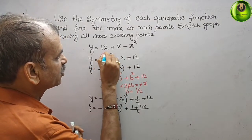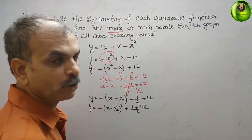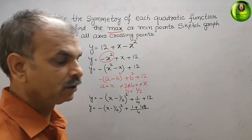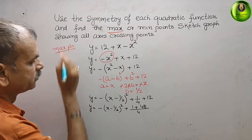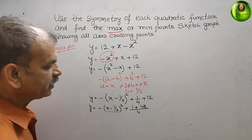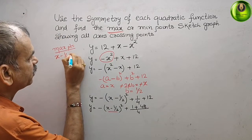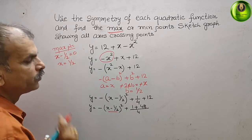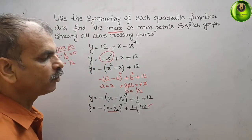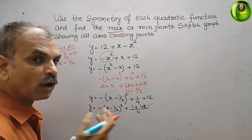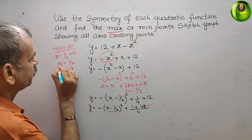Since there is a minus x squared term, we will get a maximum point. The maximum point is found by setting x minus 1 by 2 equal to zero, giving x equal to 1 by 2. The y-coordinate is 49 by 4. So the maximum point coordinates are x equals 1 by 2 and y equals 49 by 4.